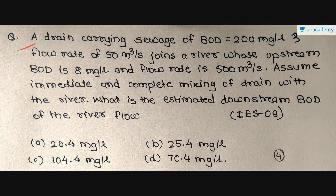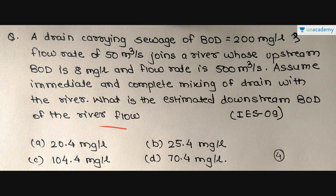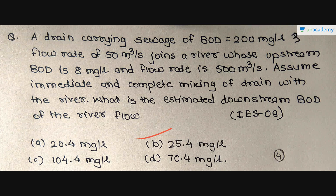The next question: a drain carrying sewage with BOD of 200 mg/L and flow rate of 50 m³/s joins a river whose upstream BOD is 8 mg/L and flow rate is 500 m³/s. Assuming immediate and complete mixing of the drain with the river, what is the estimated downstream BOD of the river flow? This question was asked in IES 2009. Options: A: 20.4, B: 25.4, C: 104.4, D: 70.4 mg/L.